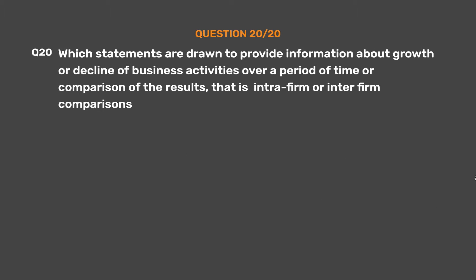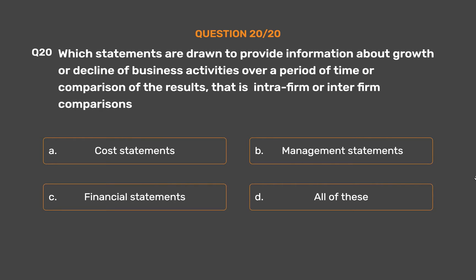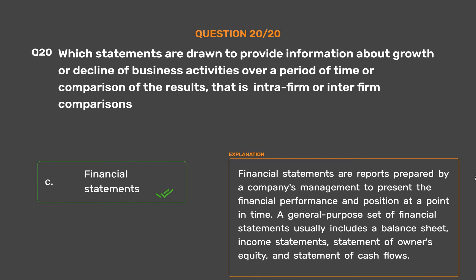Question No. 20: Which statements are drawn to provide information about growth or decline of business activities over a period of time, or for comparison of results — i.e., intra-firm or inter-firm comparisons? Option A: Cost statements. Option B: Management statements. Option C: Financial statements. Option D: All of these. The correct answer is Option C: Financial statements. Financial statements are reports prepared by a company's management to present financial performance and position at a point in time, typically including a balance sheet, income statement, statement of owner's equity, and statement of cash flows.